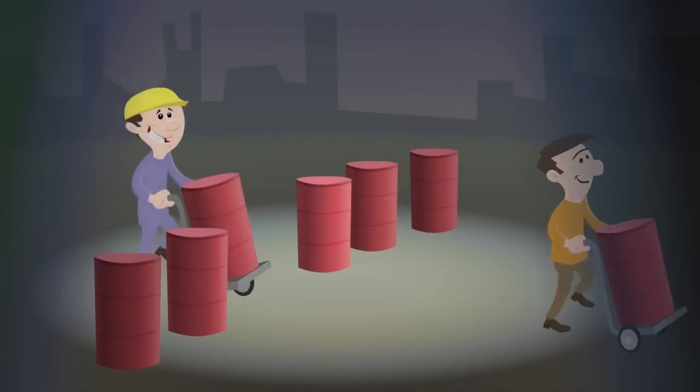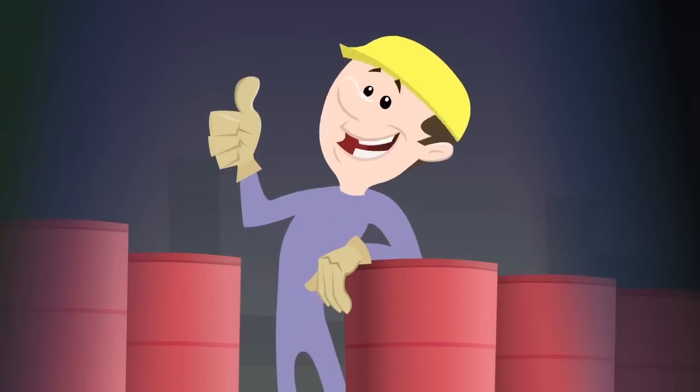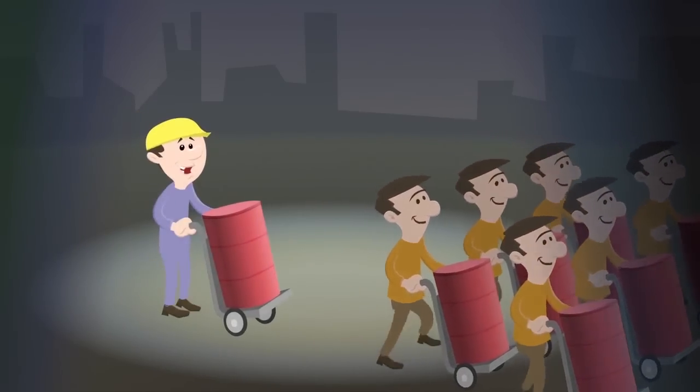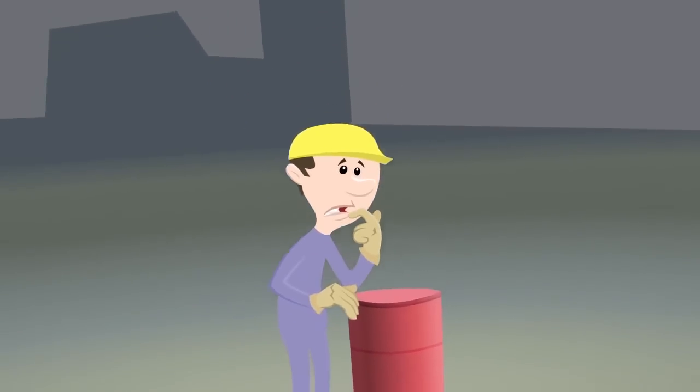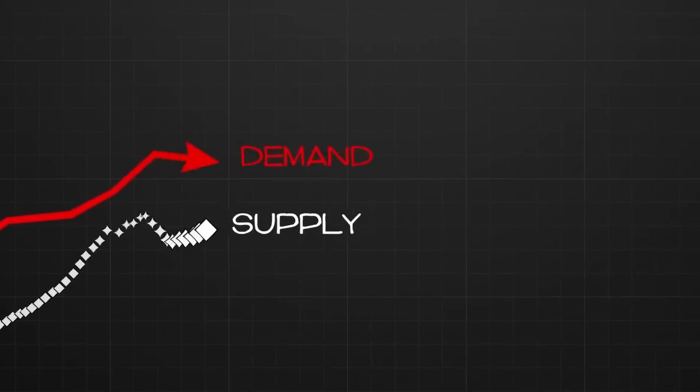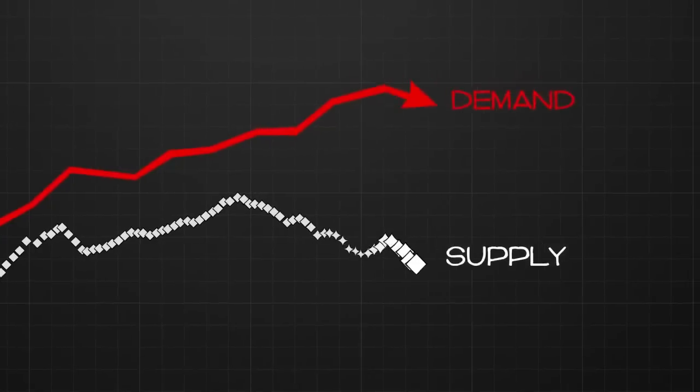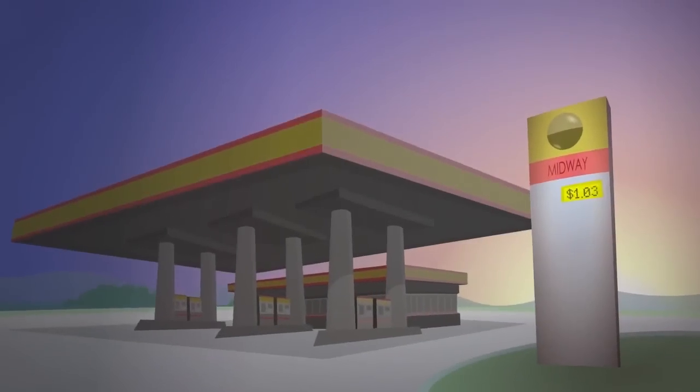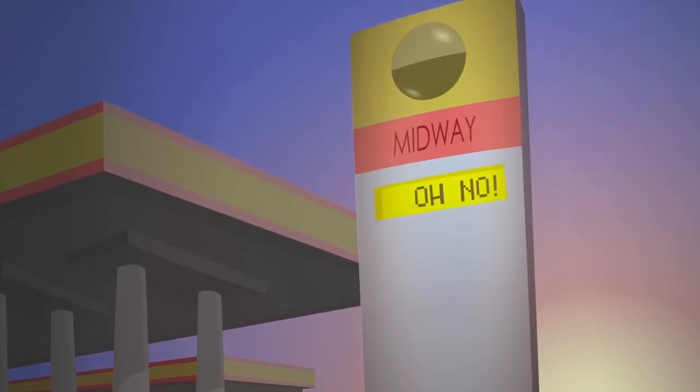In the 1960s, six barrels of oil were found for every one that was used. Four decades later, the world consumes between three and six barrels of oil for every one that it finds. Once the peak of world oil production is reached, demand for oil will outstrip supply, and the price of gasoline will fluctuate wildly, affecting far more than the cost of filling a car.